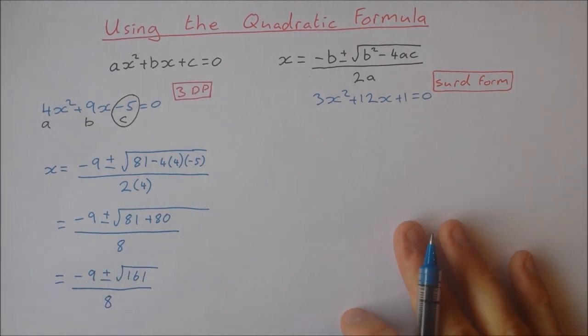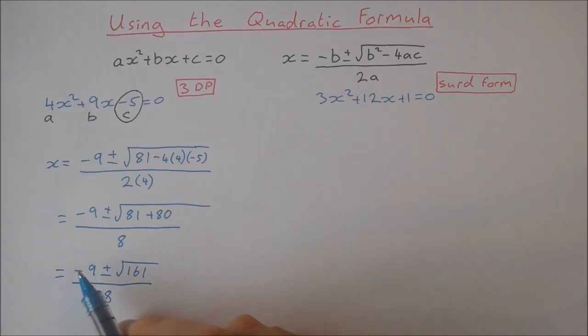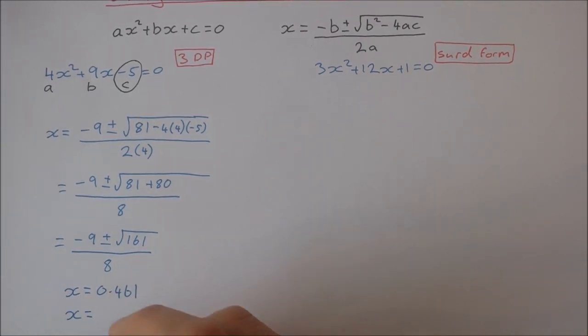Now I want the answer correct to 3 decimal places, so I just go to my calculator now and type this in individually. First of all with minus 9 plus square root of 161 over 8, and then minus 9 minus the square root of 161 over 8. And I get my two solutions to be x equal to 0.461, and x equal to minus 2.711.